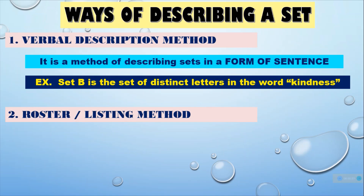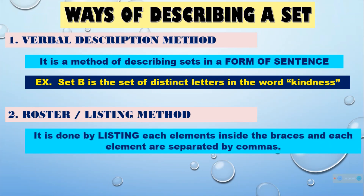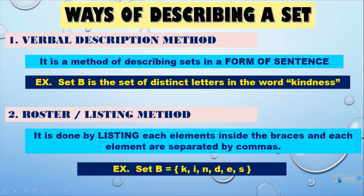The second one is the roster or listing method. It is done by listing each element inside the braces, and each element is separated by commas. For example, Set B is equal to the distinct letters in the word 'kindness', which are: K, I, N, D, E, S, S.